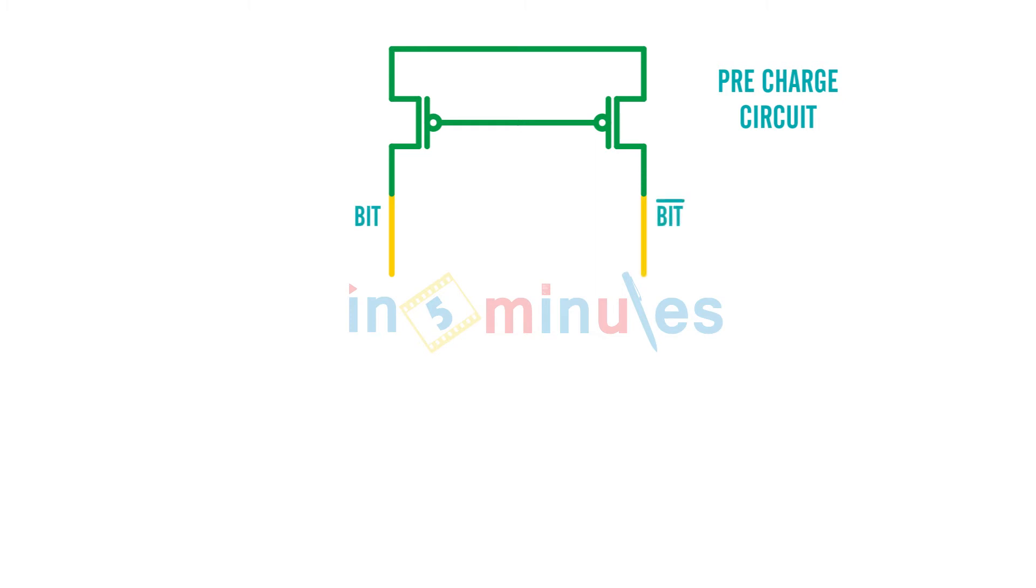This is my bit bar. And if this is my six transistor SRAM, this bit is going to go to NMOS, this bit is going to go to my NMOS bit bar, and this is connected by cross-coupled inverters. This is my six transistor SRAM we already studied.